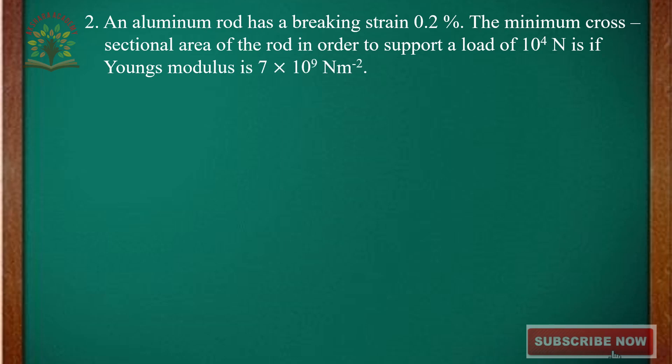For the second problem: Young's Modulus E = 7 × 10⁹ N/m². They give a strain of 0.2% and a load of 10⁴ Newtons, with Y = 7 × 10⁹ N/m². You have to find the area of cross-section. Let us go to the solution.